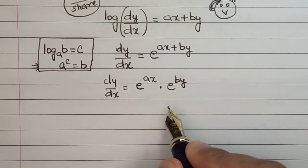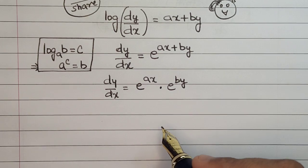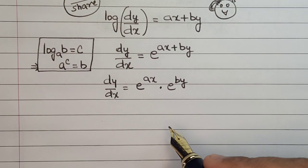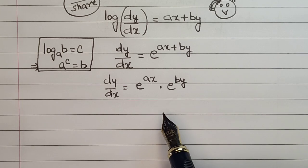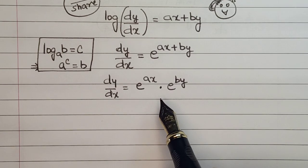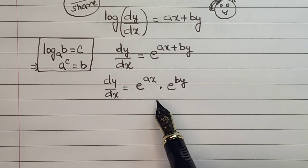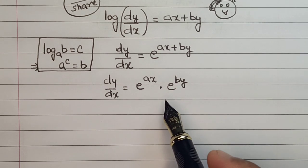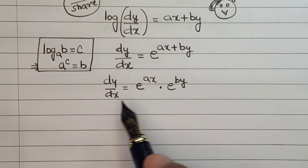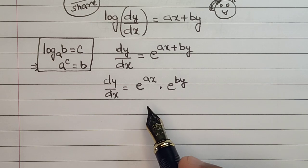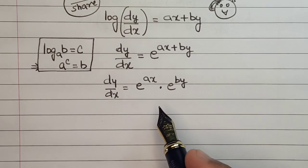After this, the next task at hand is to arrive at the values of x and y. For this, we will shift the entire x component on one side of the equals sign and all the y component towards the other end. It's shifting the places of the x functions and the y functions.